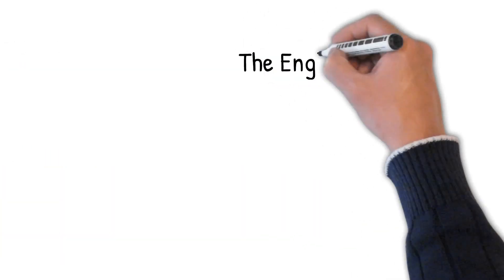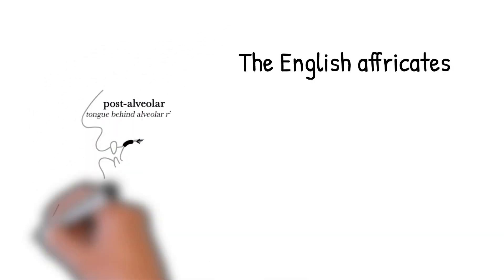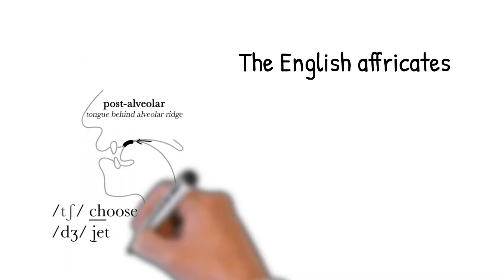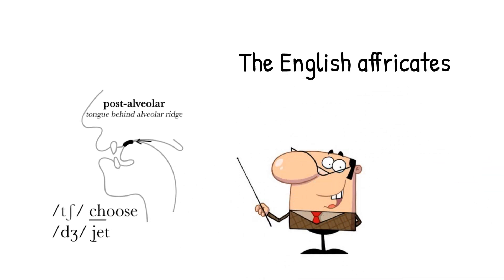English only has two affricate consonants, and they're both palatal alveolar sounds. The illustration here also provides the International Phonetic Alphabet symbols for each. The two affricates in English are CH as in 'choose' and J as in 'jet.'